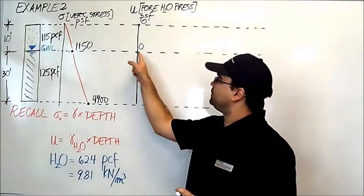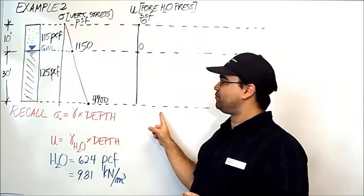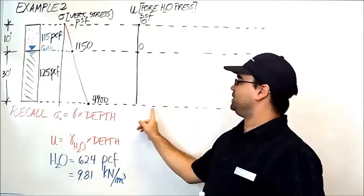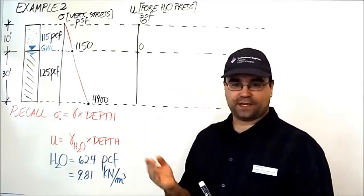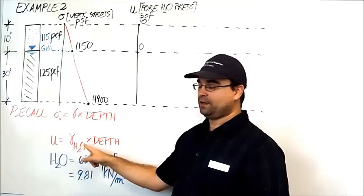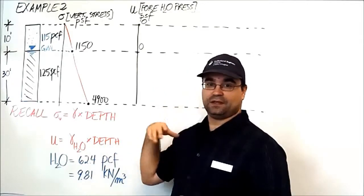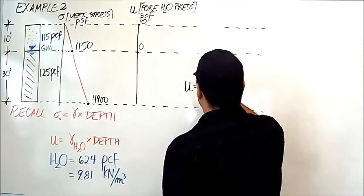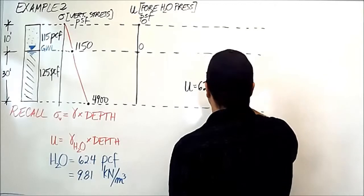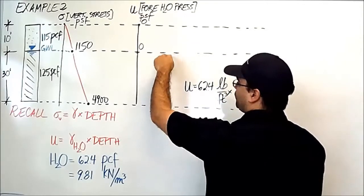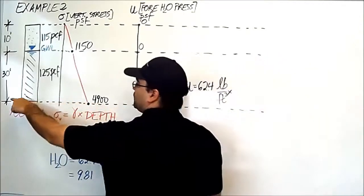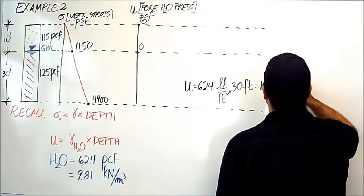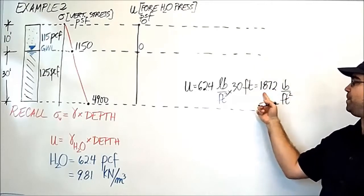So we are now ready to move on to calculate the pore water pressure at the bottom of the borehole, 40 foot depth, 30 feet below this interface. So what we're looking for is what the pore water pressure is going to be here at the bottom. Let's figure that out. Remember, the formula is the pore water pressure is the density of water times the depth of water above it. At this location, the pore water pressure is the density of water, 62.4 pounds per cubic feet, times the amount of water above this location is 30 feet.